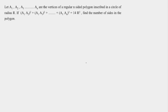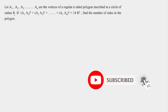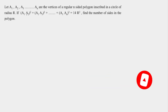Welcome to the series of trigonometric questions. Today's question is: let a1, a2, a3 and so on till a_n be the vertices of a regular n-sided polygon inscribed in a circle of radius R. Along with this, one more condition is given: a1a2² + a1a3² and so on till a1a_n², the sum of these squared lengths, equals 14R². Using this condition, we need to determine the value of n.